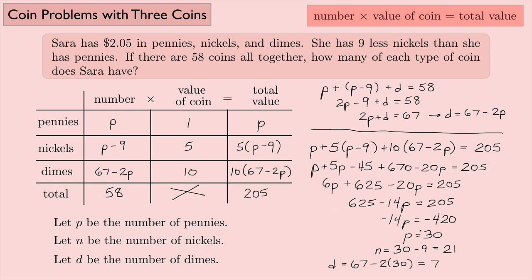So you can check this. If we do 30 times 1 plus 21 times 5 plus 7 times 10, you do indeed get $2.05.